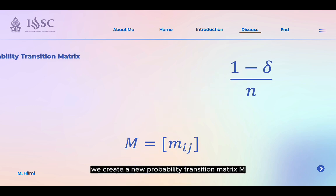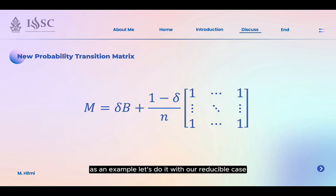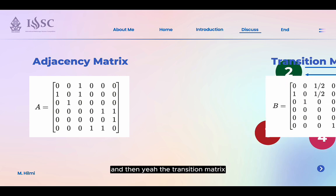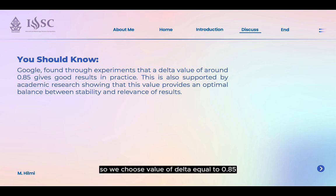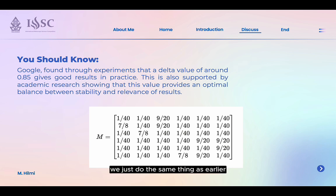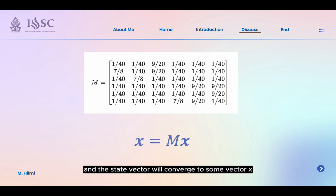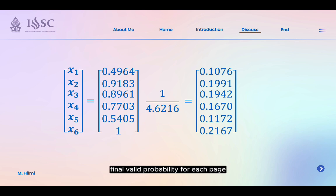To implement this idea, we create a new probability transition matrix M, which can also be written in the alternate form shown. As an example, let's apply this to our reducible case. As usual, we convert to graph form, make the adjacency matrix, and then the transition matrix. Google found through experiment that a delta value of around 0.85 gives a good result in practice, so we choose delta equal to 0.85. By the definition of our new probability transition matrix, we obtain matrix M. From here, we do the same thing as earlier: M is the transition matrix for the Markov chain, the state vector converges to some vector x, and solving for x then normalizing by dividing by the sum of entries gives us the final valid probability distribution for each page.